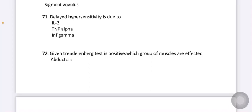Delayed hypersensitivity is due to. The options are IL-2, TNF-alpha, and INF-gamma. Here the option is INF-gamma.